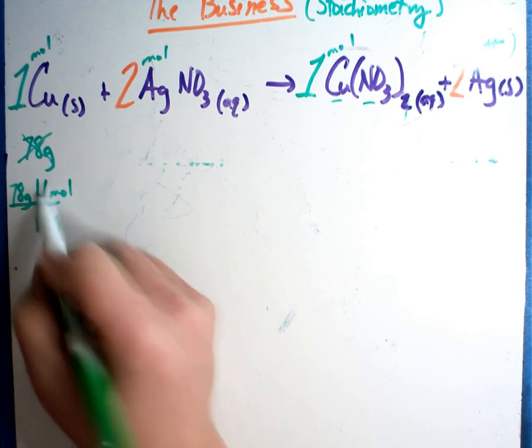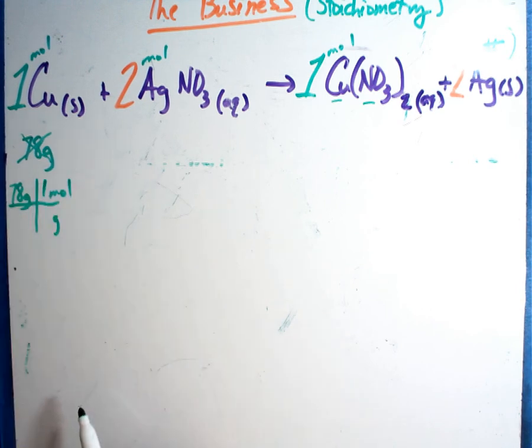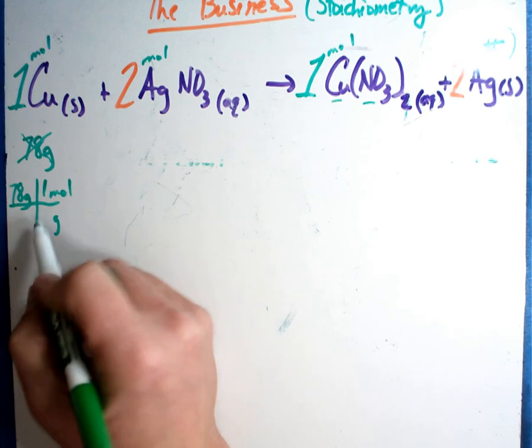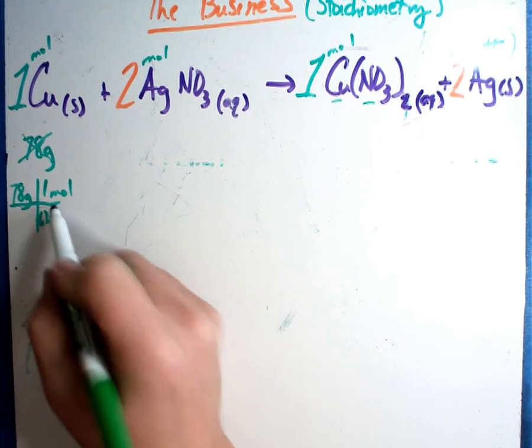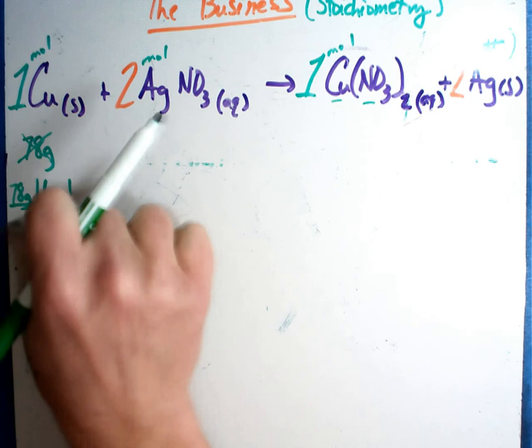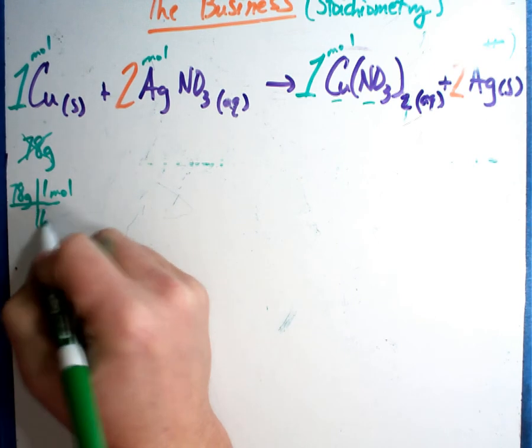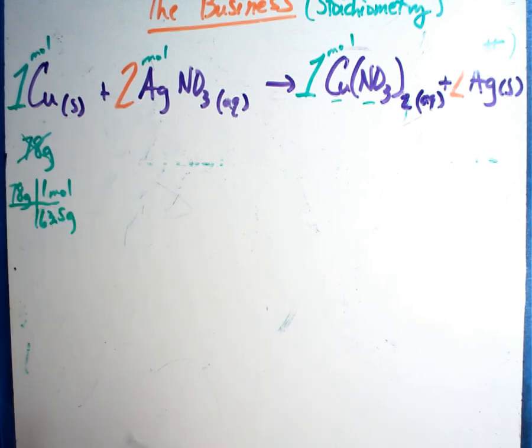Whenever I work problems, mole is always one. That will never change. Grams are going to come off the chart. 63.5, we'll make that a little more legible for you, 63.5 grams, right off the chart.